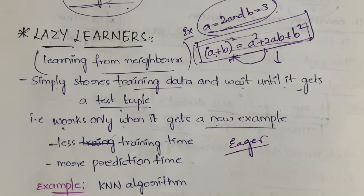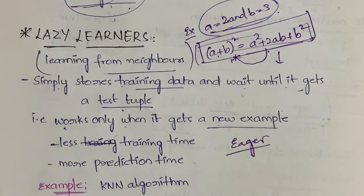And whenever input comes, it will immediately substitute the values and give the output. Got it? So that's about eager learning.